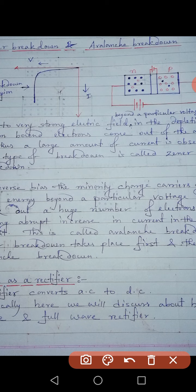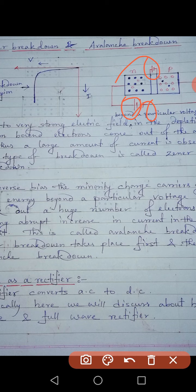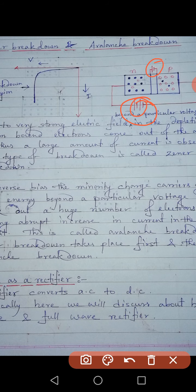When the diode is in reverse bias, you can see that the polarity of the external battery and the polarity of the fictitious battery are the same — left side is positive and right side is negative for both. Since the polarities are the same, the external potential adds to the fictitious battery. That is why in reverse bias the depletion region broadens or gets thicker, while in forward bias it gets thinner.